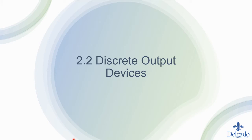In this next video, we'll talk about discrete output devices. In 2.1, we talked about discrete input devices, and now we'll look at the outputs. The inputs are what's being sensed from the plant floor, and the outputs are the things that we will turn on or off to control the process or provide indications as to what's going on with the process.